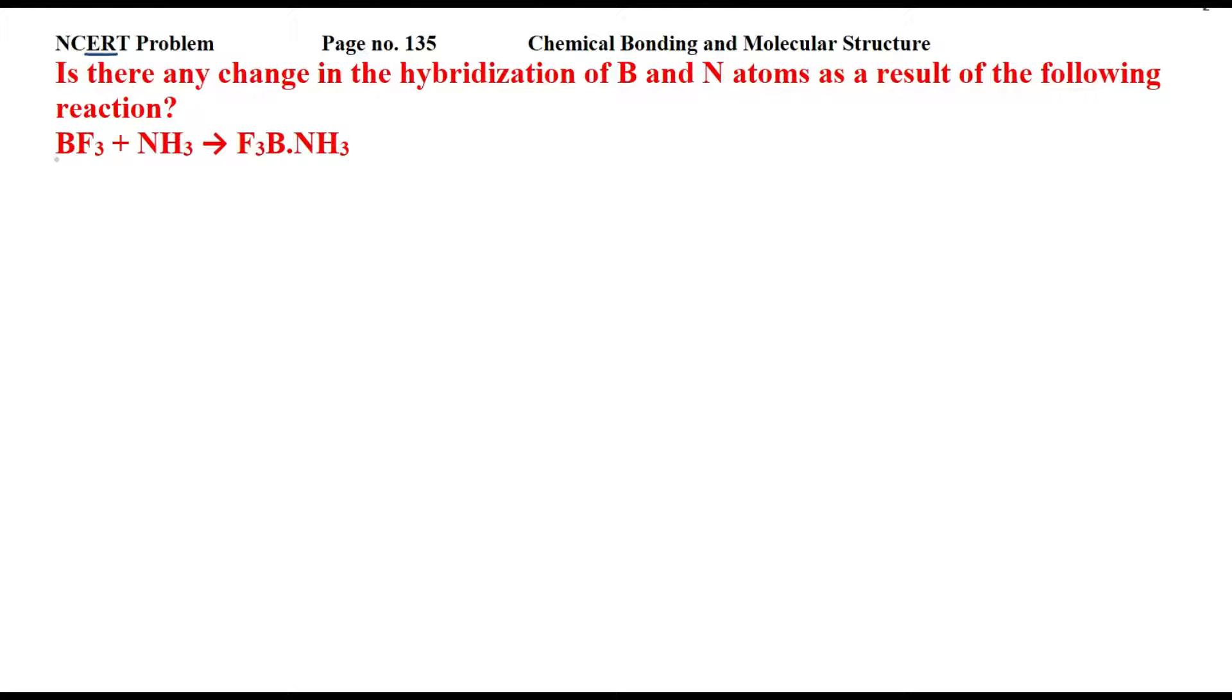First, what is hybridization of boron in BF3? What is in NH3? You have to find out what is hybridization of nitrogen in NH3. Then afterwards, you react to both of them and we have to form an adduct. And in this adduct, now, the hybridization of boron and nitrogen, is there any difference in it or not? So first, we will find out their individual hybridization.